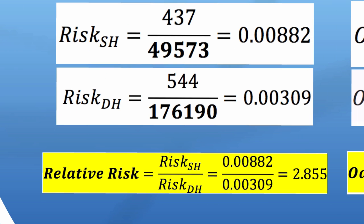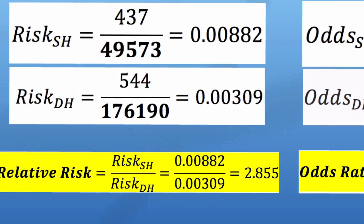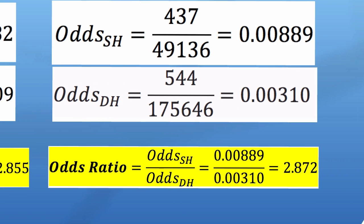Let's have a look at relative risk, also termed risk ratio. That's actually a division of the single-handed risk over the double-handed risk. So 0.00882 divided by 0.00309. Again, this figure that we get here is very interpretable. A single-handed backhand player has 2.855 times the risk of developing tennis elbow as that of a double-handed backhand player. If we scroll over to what the odds ratio represents, it's as simple as just dividing the two odds, and we get 2.872.